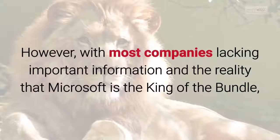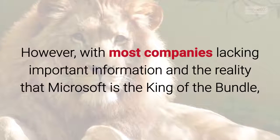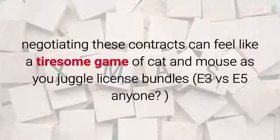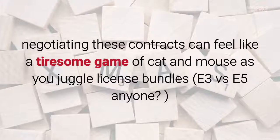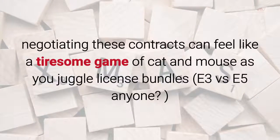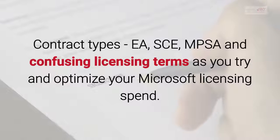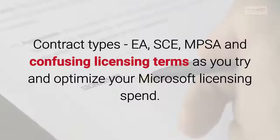However, with most organizations lacking important information and the reality that Microsoft is the king of the bundle, negotiating these contracts can feel like a tiresome game of cat and mouse as you juggle license bundles — E3 versus E5 anyone — contract types like EA, SCE, and MPSA, and confusing licensing terms as you try and optimize your Microsoft licensing spend.